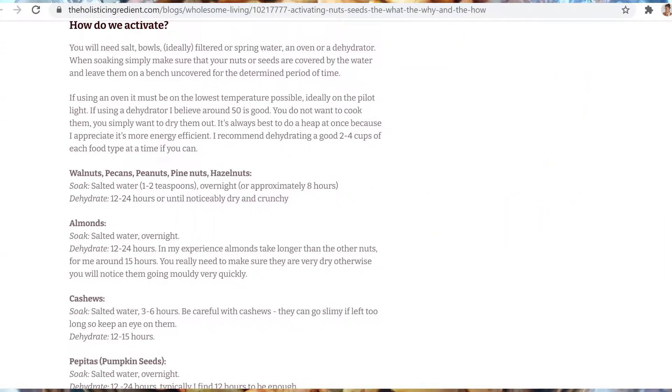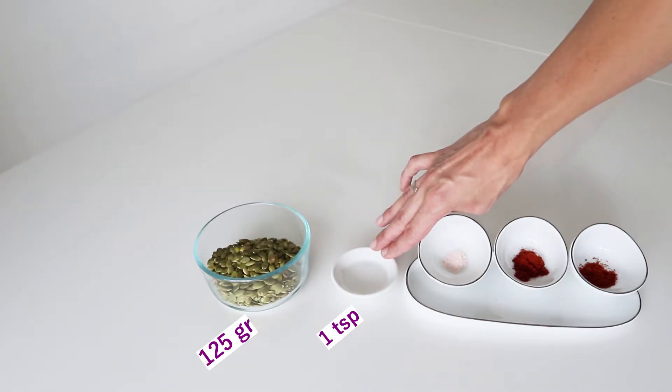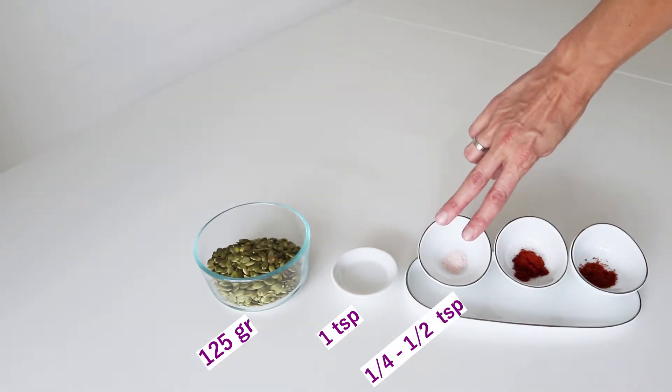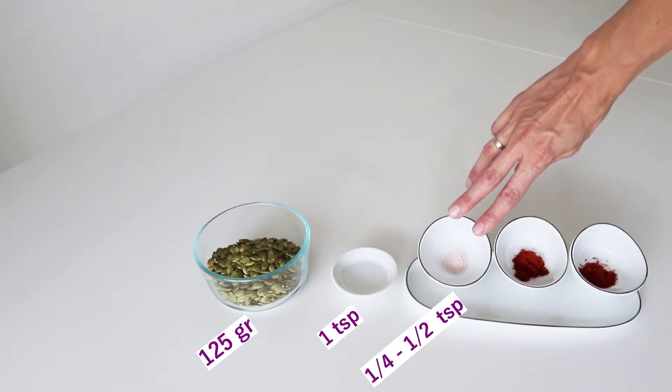One teaspoon coconut oil—preferably coconut oil, but you can swap it for any other oil. One quarter teaspoon up to half a teaspoon salt, preferably Himalayan salt because it's one of the healthiest salts.